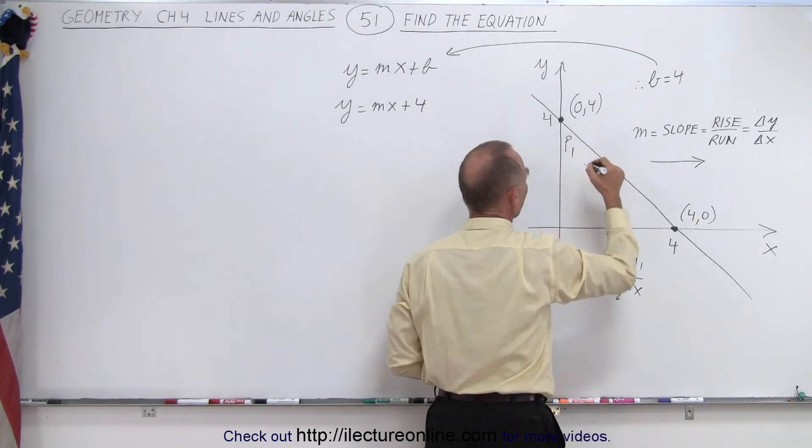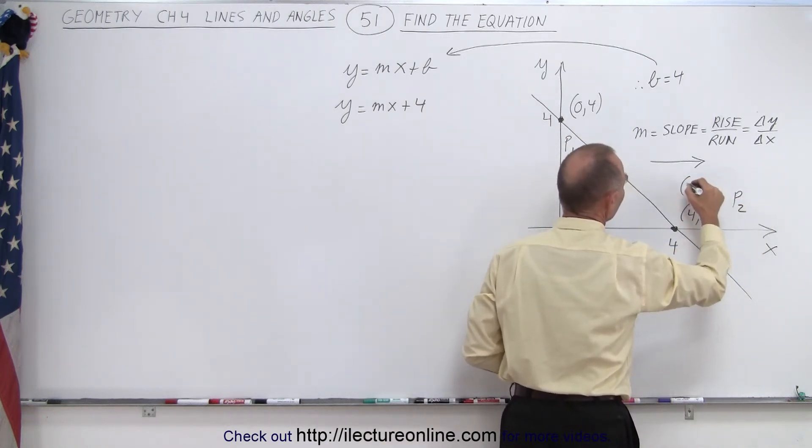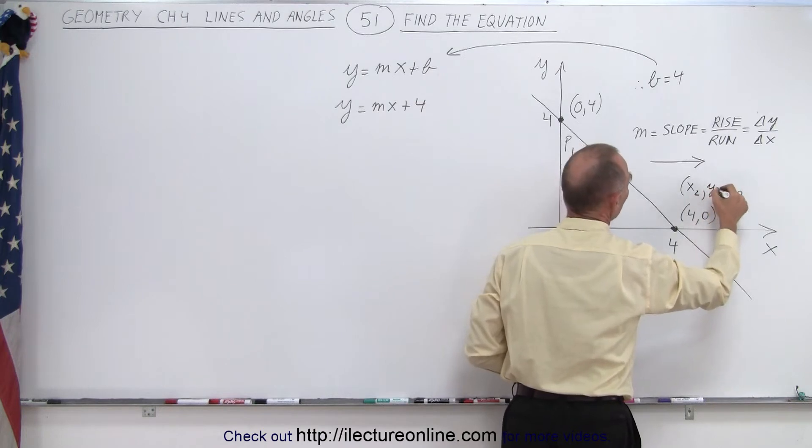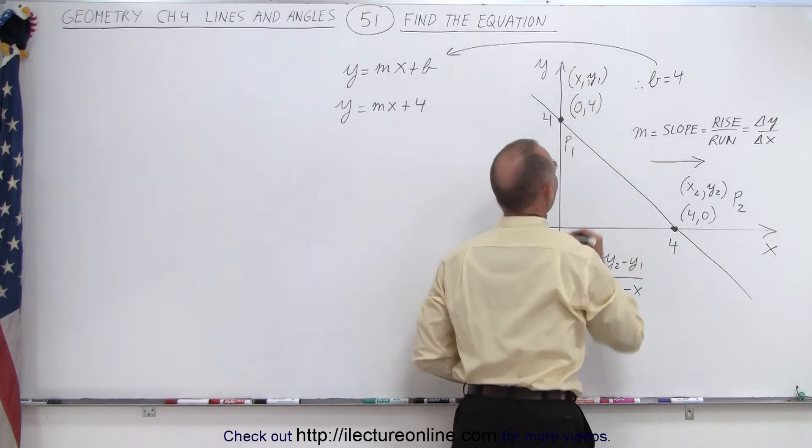So this is my first point, 0, 4. This is my second point, 4, 0. And so this here is my x2, y2 coordinates. And over here this is my x1, y1 coordinates like that.